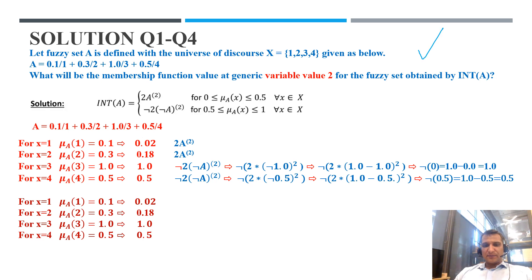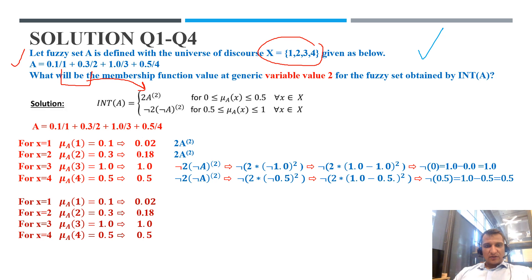This is Question 1. The universe of discourse is given, and we have fuzzy set A with membership values for its fuzzy elements. Fuzzy elements 1 and 2 both have values less than 0.5, so the first formula is applicable — A is replaced with the membership value. Fuzzy elements 3 and 4 have values 0.5 and 1, so the second formula applies.